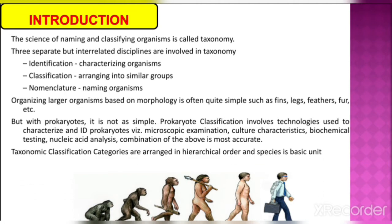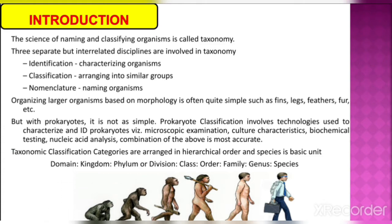Taxonomy classification categories are arranged in hierarchical order and species is the basic unit. The hierarchy starts with domain, kingdom, phylum or division, class, order, family, genus, and species.